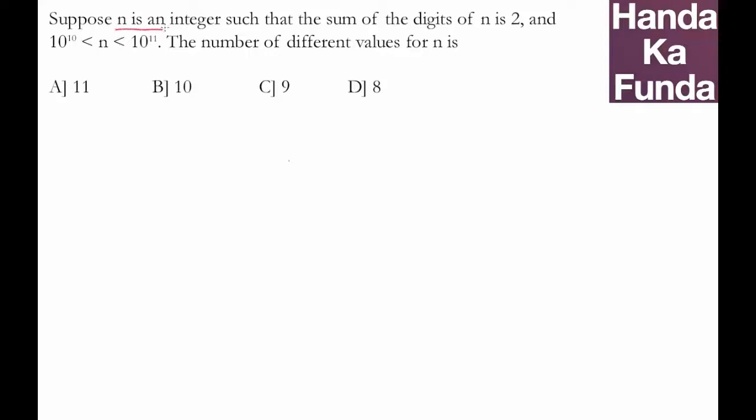We are given that n is an integer such that the sum of the digits of n is 2. Also, n lies between 10 to the power 10 and 10 to the power 11. So first of all, what is 10 to the power 10?